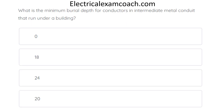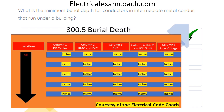What is the minimum burial depth for conductors in intermediate metal conduit that run underneath a building? The correct answer is zero. We're going to head to Table 300.5. We start on the left-hand side of the table and look for our specific location. If there's not one listed, we use the 'all locations' row at the top. Then we come across and tee off with our respective column — in this case, column two for IMC — and we find the correct answer is zero.